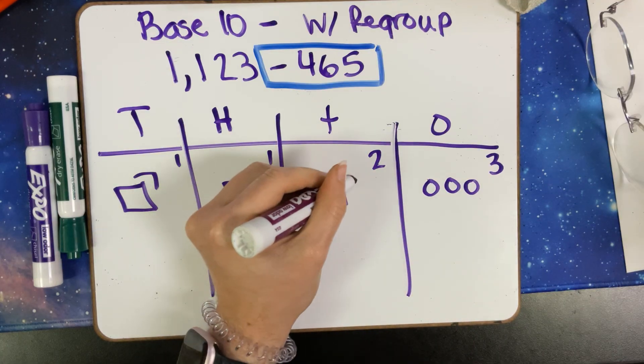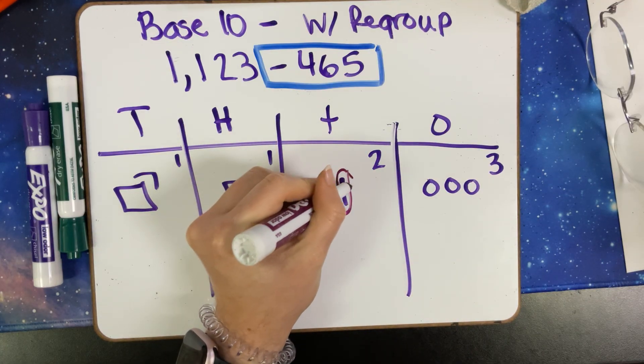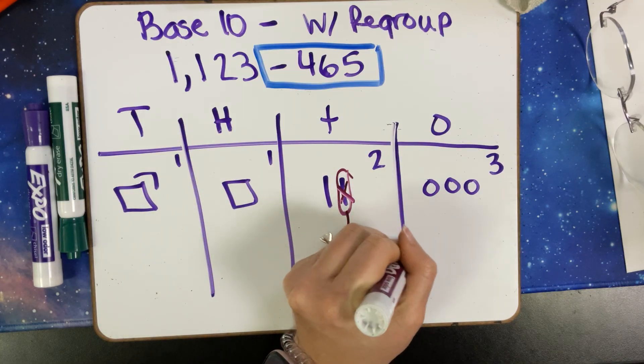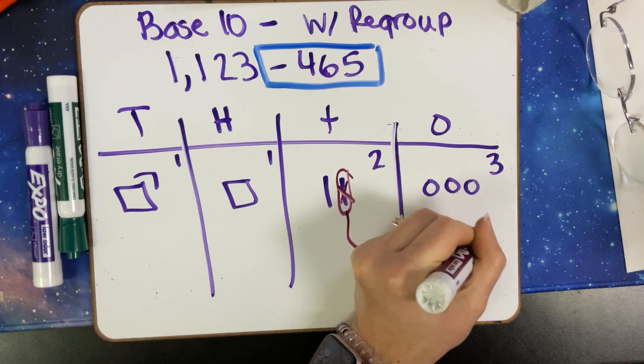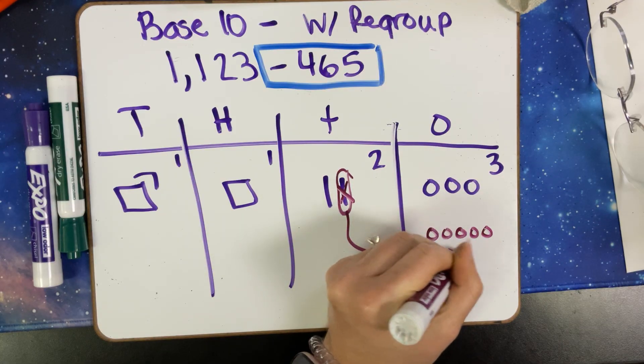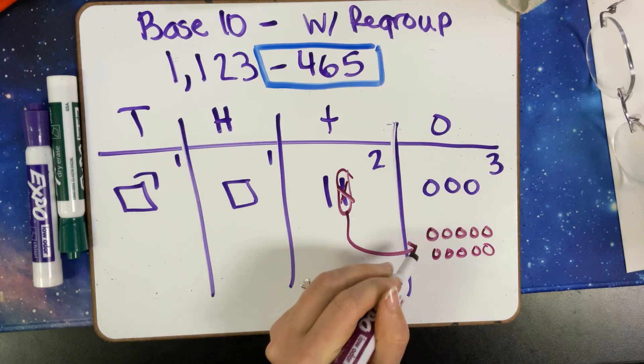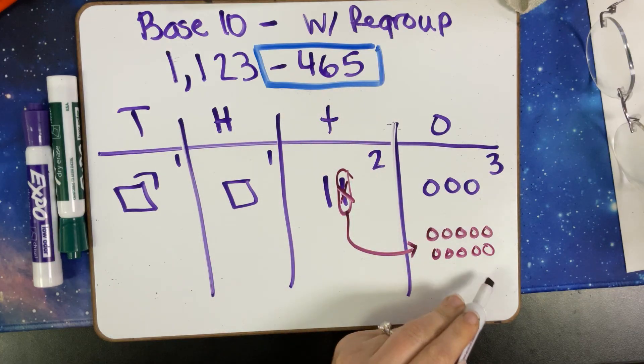I'm going to need to take a 10 and we're going to break it into its pieces. A 10 stick has 10 ones in it. So we're going to draw 10 ones: five, six, seven, eight, nine, 10. So now I can subtract five there.